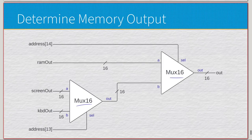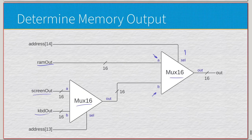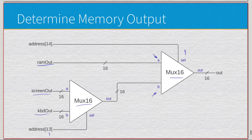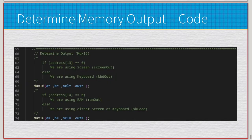Then we have two Mux16s mirroring our first demuxes. We look at address bit 14: if it's zero, output A is ram_out; if it's one, we look at address bit 13 — if zero, it's screen_out; if one, it's keyboard_out. So the mux logic determines which of the three we're actually using based on how far into that contiguous memory block we are: address 14 equals zero means RAM; otherwise, address 13 equals zero means screen, otherwise keyboard.